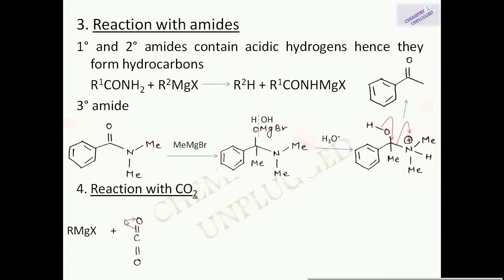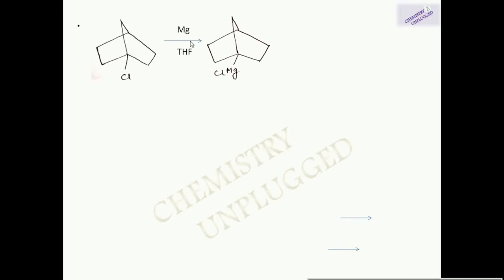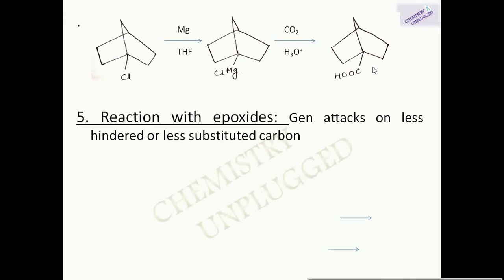Synthetic application 5: reaction with CO₂ to form carboxylic acid. The C=O bond shifts electron density to oxygen, giving a partially negative intermediate. Hydrolysis adds H from water to the oxygen, giving carboxylic acid. We can also use very hindered chlorides — for example, by first forming a Grignard reagent using magnesium and THF, then reacting with CO₂ followed by hydrolysis to give a carboxylic acid.